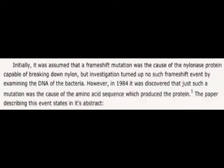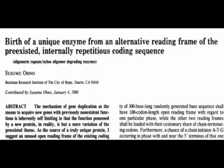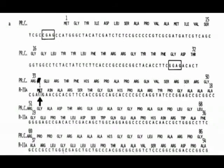Interestingly, he doesn't provide any sources for the claim that the frameshift event was not discovered in DNA. The source he does provide — from 1984, of which it appears he has only read the abstract — actually shows the sequence of the plasmid. The insertion, marked by arrows, shows where thymine (represented by T) was inserted into the sequence, causing the frameshift. A ribosome cannot cause such a change to the DNA, so obviously this explanation fails.